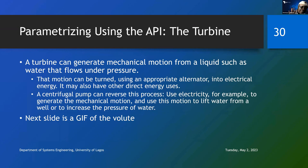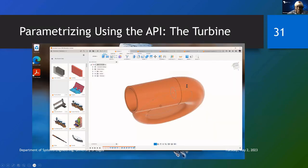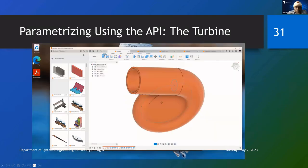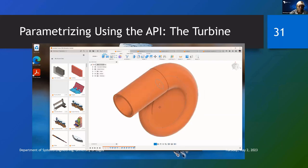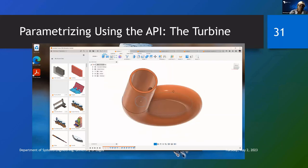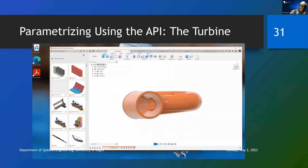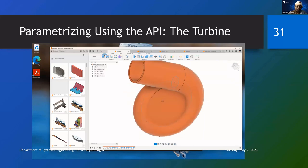A turbine contains two types of components, mainly a volute and an impeller. You'll see how a volute looks here. This is what a volute looks like. The volute of an impeller is what we are looking at now - that is what it looks like using this GIF.